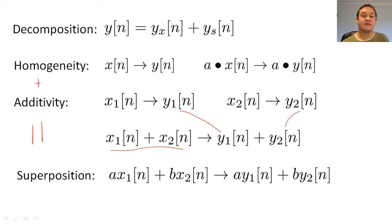Finally, we say that a system is linear if it satisfies the decomposition property and both y sub x of n and y sub s of n are linear. Generally, zero state linearity is much more important and is therefore often called linearity.